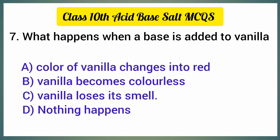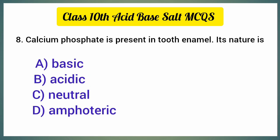What happens when a base is added to vanilla? The correct answer is option C: vanilla loses its smell. Next, calcium phosphate is present in tooth enamel; its nature — the correct option is option A, basic.